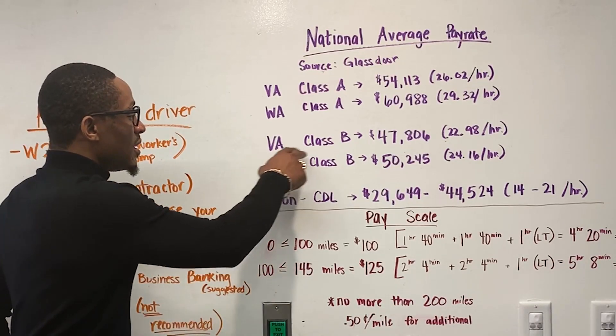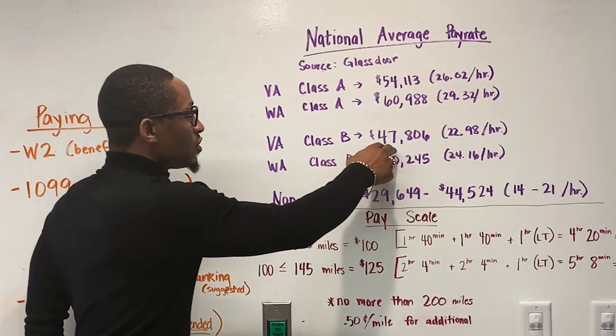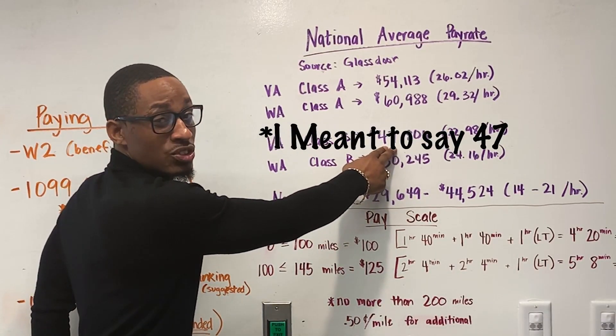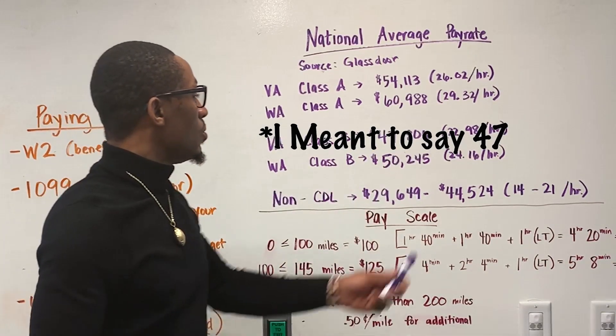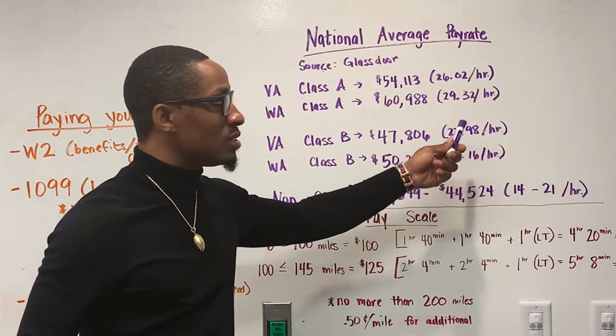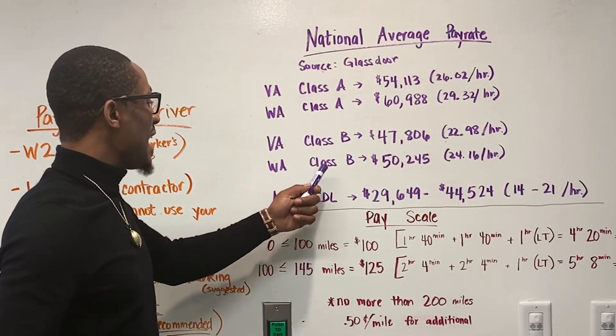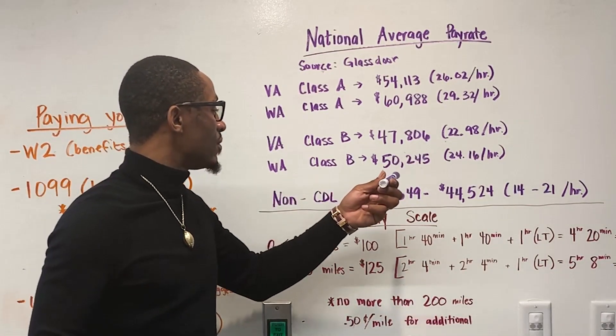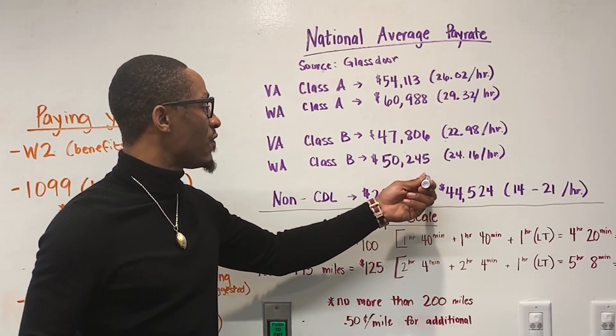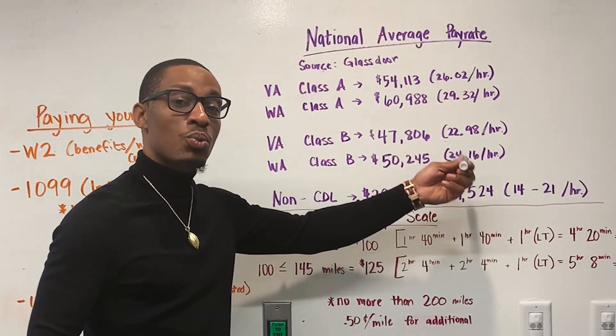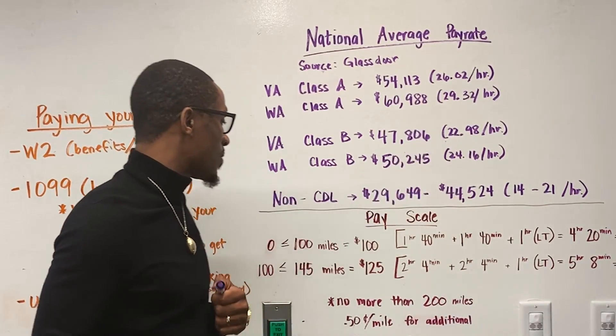In Virginia, a class B driver starts out at $42,806, which translates to $22.98 an hour. Washington State, class B drivers start out at an average of $50,245, which translates to $24.16 an hour.